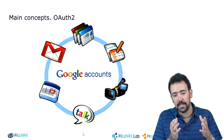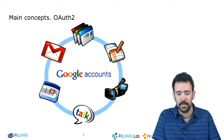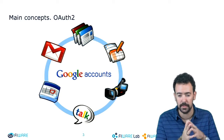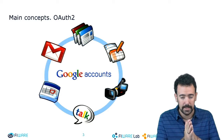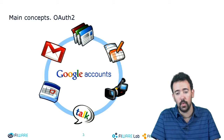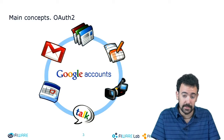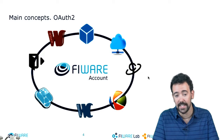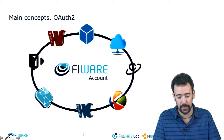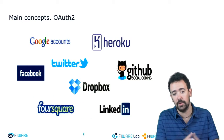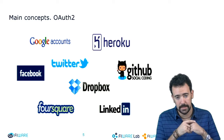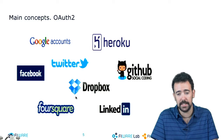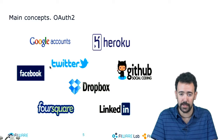To start, it's important to understand that OAuth2 is a protocol that allows us to perform the thing I explained in the first introduction lesson. It is the same mechanism that Google accounts use, and it is the mechanism that allows you, having a single FIWARE account, to log in to all the services provided inside FIWARE. This protocol is not only used by us — it is used by a huge number of existing services.